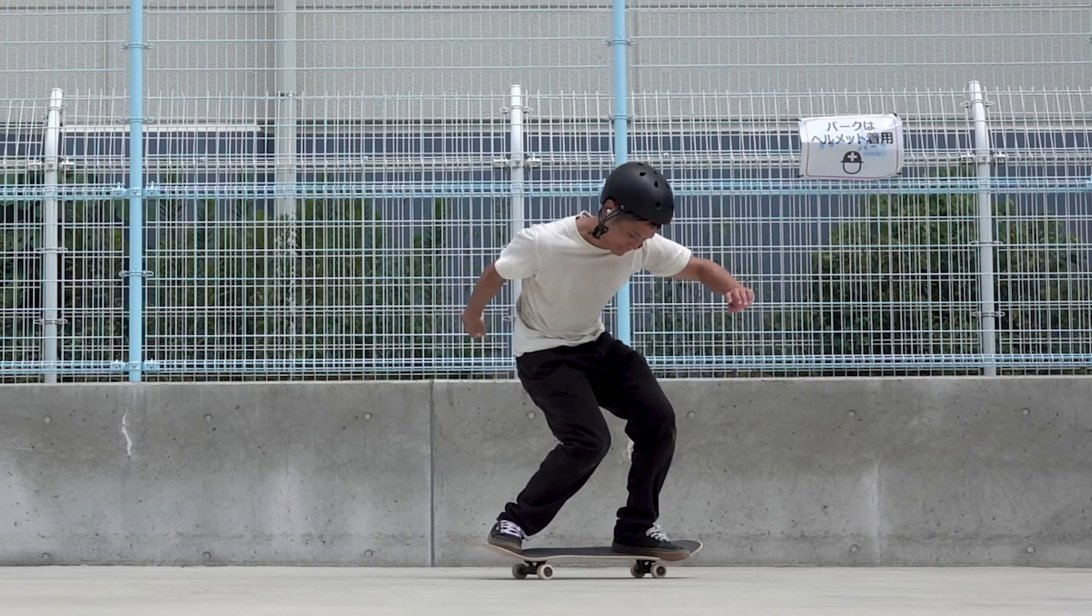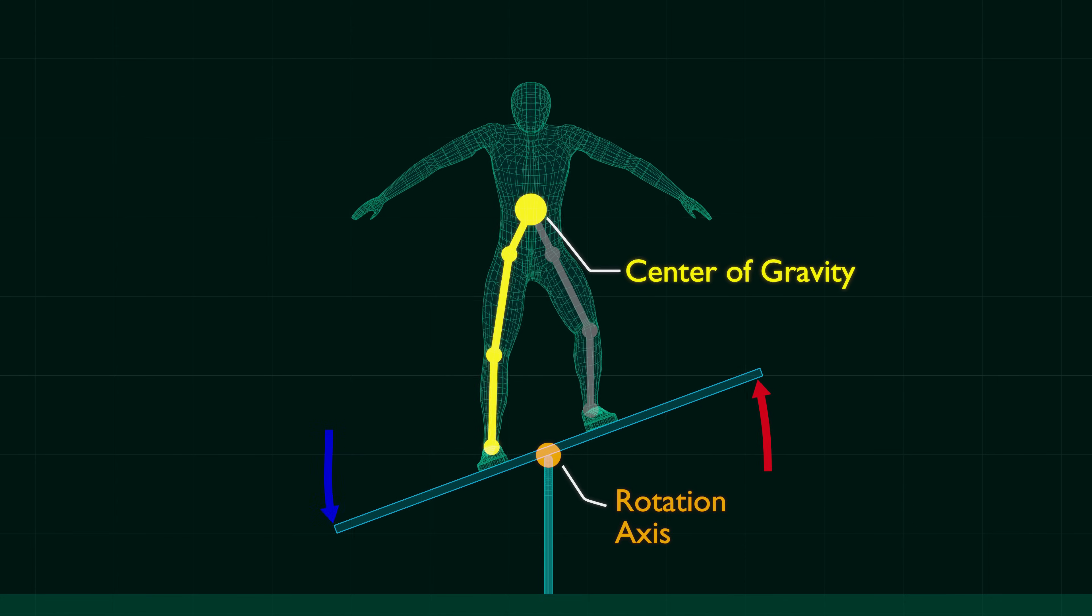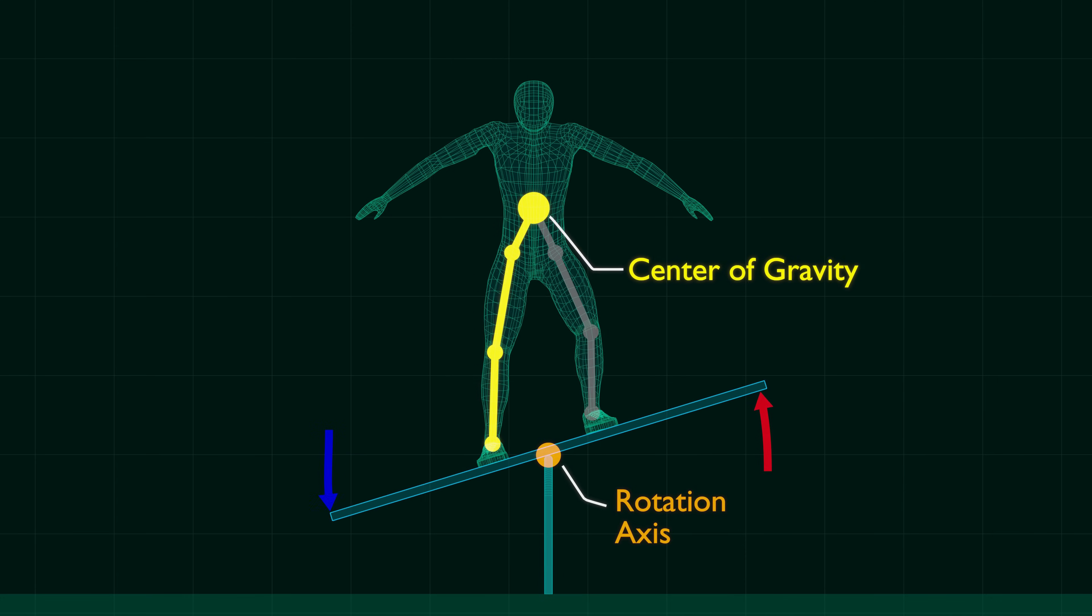The reason why your Ollie doesn't get high lies in the principle of the seesaw. The force to pop the tail may angle the board, but it does not move the center of gravity.